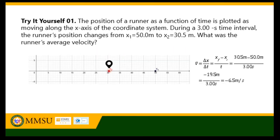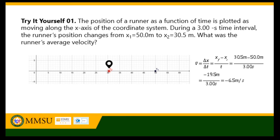On the first item, the runner's position changes from 50 meters to 30.5 meters, so there is movement going to the left, which means the displacement and velocity will be negative. The average velocity of the runner is 30.5 meters (final position) minus 50 meters (initial position), which is negative 19.5 meters, divided by 3 seconds, equal to negative 6.5 meters per second. The negative sign implies the runner moved to the left.